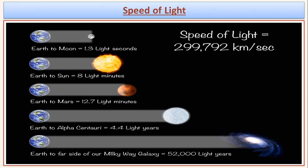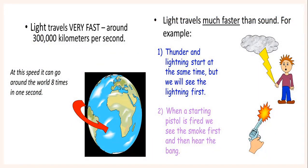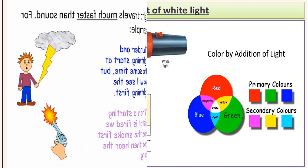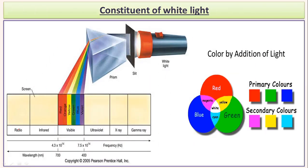Eight light minutes means the light from the sun takes around eight minutes to reach the earth's surface. With the speed of light, if you travel around the earth, you can go around it eight times in just one second. Due to the speed of light, you can also see lightning before you can hear the sound of thunder.